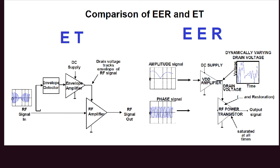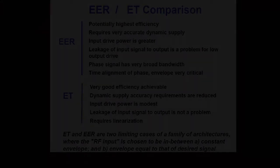In EER there is a similarity to envelope tracking in the sense that the supply is also modulated with the amplitude of the signal. However, the input signal to the RF power transistor is a phase-modulated constant amplitude signal — this is a big difference. The supply is not 100% modulated; it might be like average power tracking as in ET, but the key distinction is that a phase-modulated signal is given to the power amplifier.